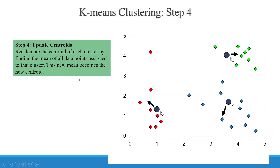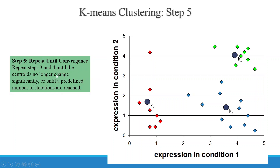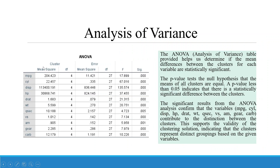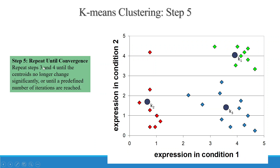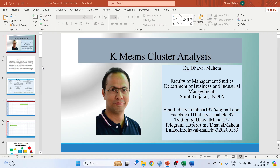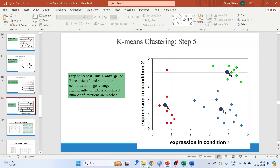The algorithm will then iterate. Repeat until convergence: repeat steps 3 and 4 until the centroids no longer change significantly or until a predefined number of iterations are reached. Now let's run K-Means cluster analysis on our dataset.